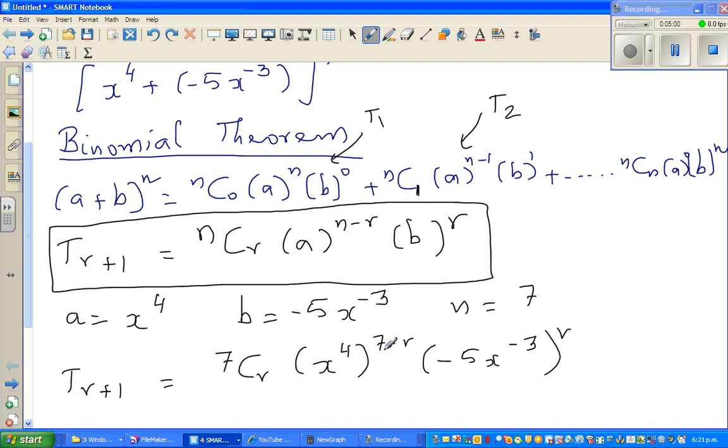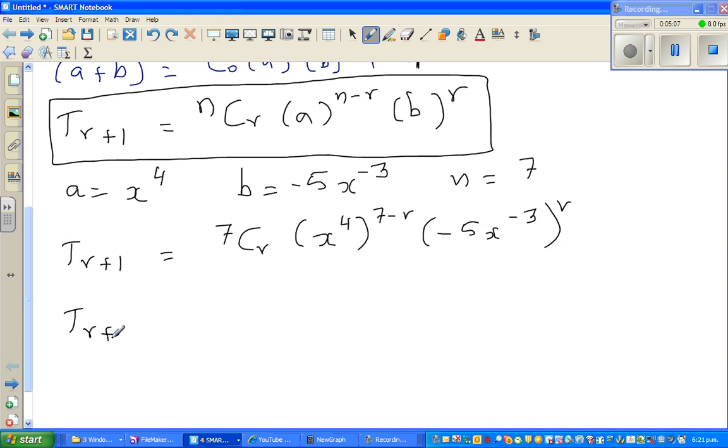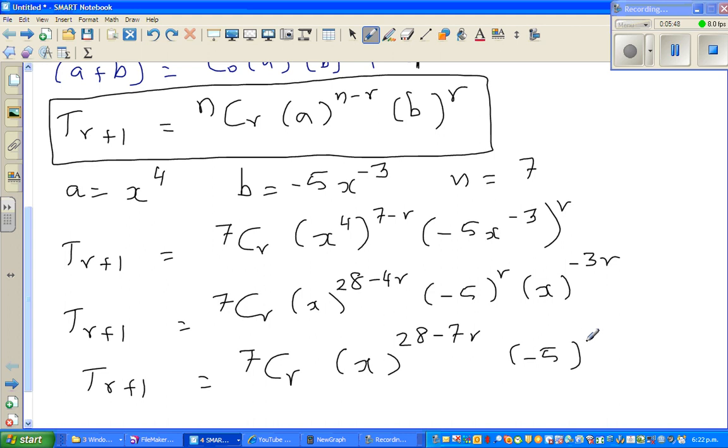So let me simplify this a little. So T sub r plus 1 is equal to 7Cr times x to the power, it's power of power, you see x multiply, so this is 28 minus 4r times minus 5 to the power r times x to the power minus 3r. So T sub r plus 1 is equal to 7Cr, so you've got these two x's, so this becomes x to the power 28 minus 7r times minus 5 to the power r.